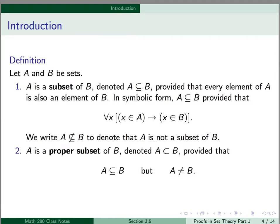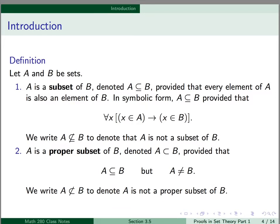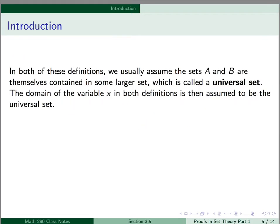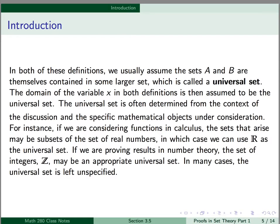We can also define a proper subset. A is a proper subset of B, with our subset symbol missing the horizontal line underneath it, provided that A is a subset of B but A is not equal to B. We can put a slash through the proper subset symbol to denote that A is not a proper subset of B. In both of these definitions, we usually assume the sets A and B are themselves contained in some larger set, called a universal set. The domain of the variable x in both definitions is then assumed to be the universal set.